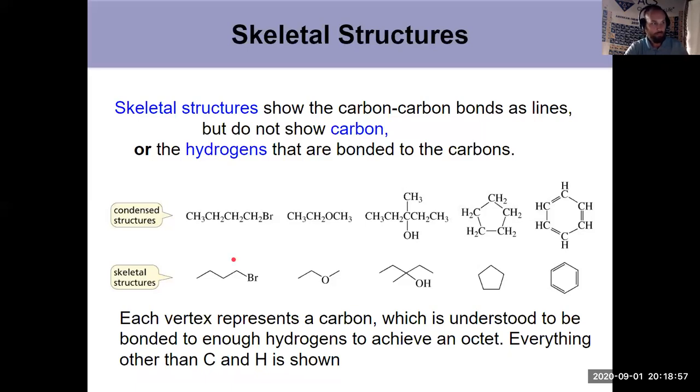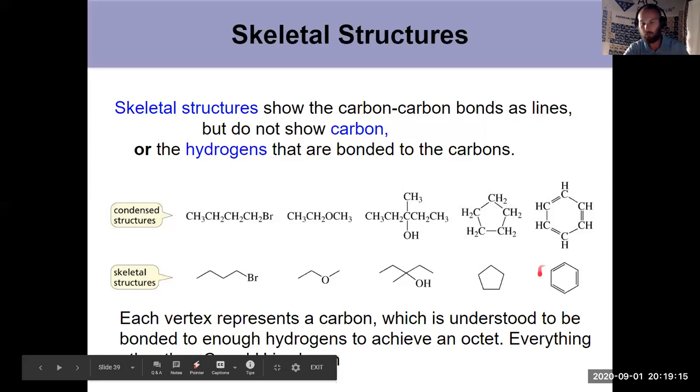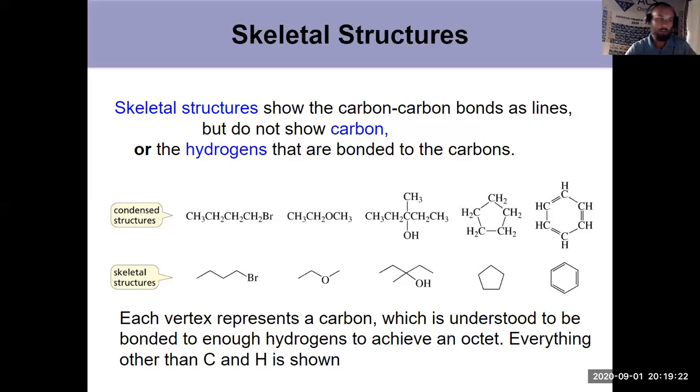If I take this carbon right here, for example, it's got a bromine on the right and a carbon on the left, but that's only two bonds. So it must have two more hydrogens. Sure enough, you see it's CH2 right there. You do have to show double and triple bonds in skeletal structures. See benzene over here. You do have to show double or triple bonds because otherwise everything would become saturated, all single bonds with extra hydrogens.